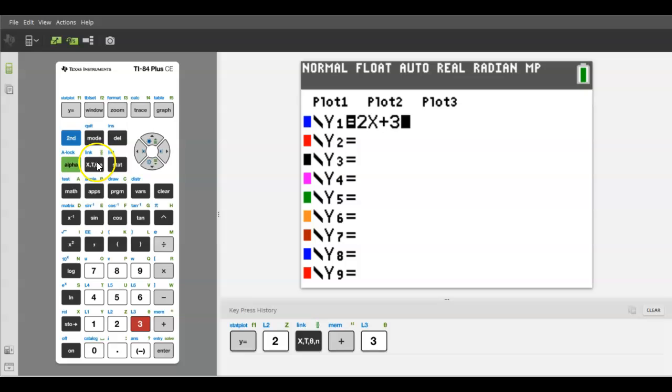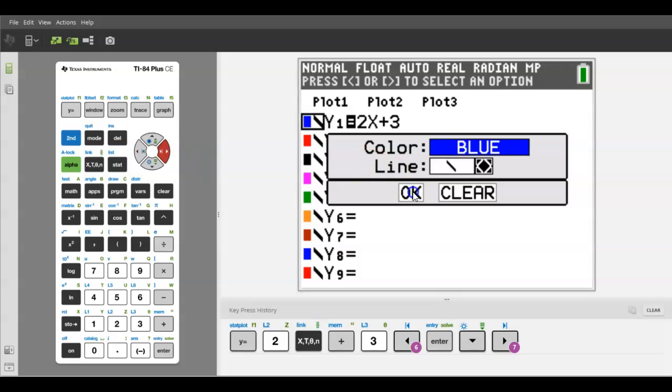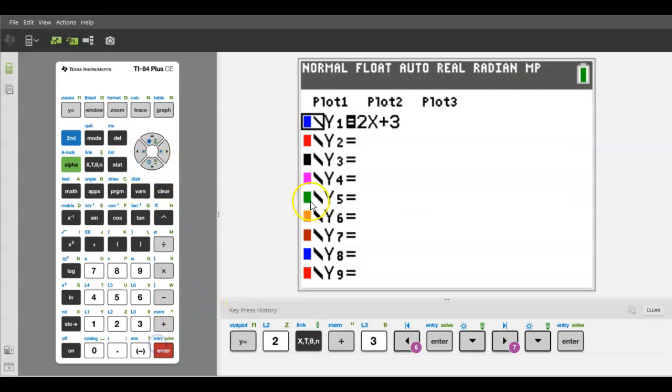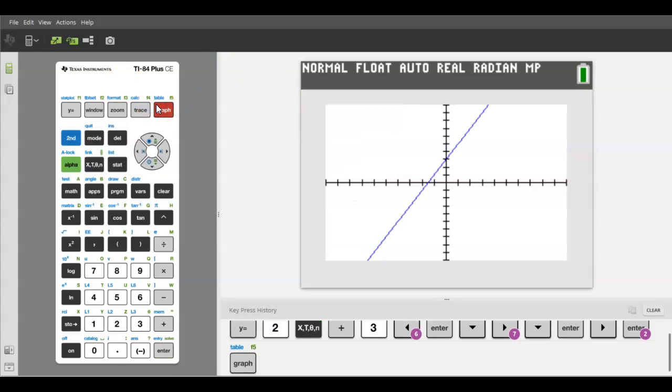A couple of useful things: if you have the TI-84 Plus CE, you have fun colors so you can change the color. You can also change the line style. If you keep hitting enter, it will change the line type. To turn the graph on and off, you'll hit enter. You can see right now there's no black box, so it's not going to graph. But if I hit enter, now it's solid black so it's going to graph.